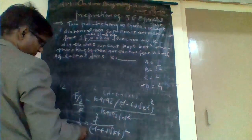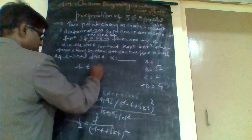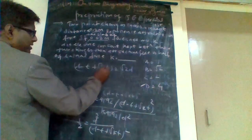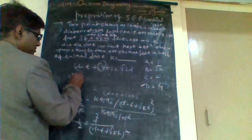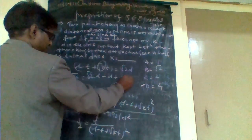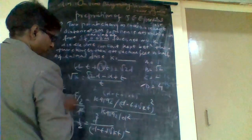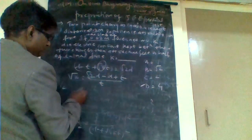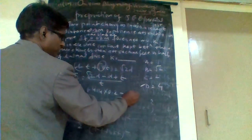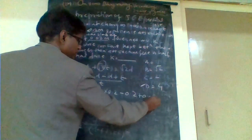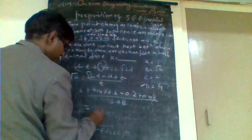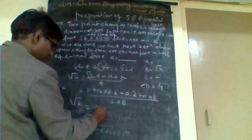Rearranging, we get d minus t plus root k into t is equal to root 2 into d. Isolating root k, we write root k equals (root 2 · d minus d plus t) upon t. Substituting the values: 1.414 into 0.2 minus 0.2 plus 0.08, divided by 0.08. Solving this gives root k equal to 2, therefore k is equal to 4.